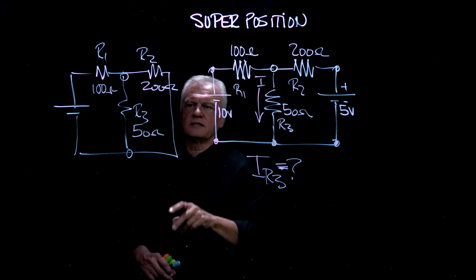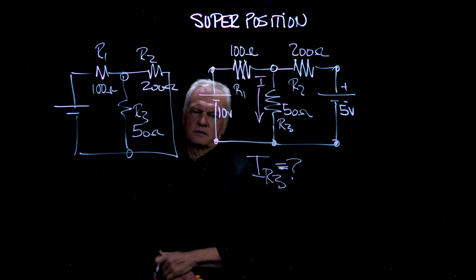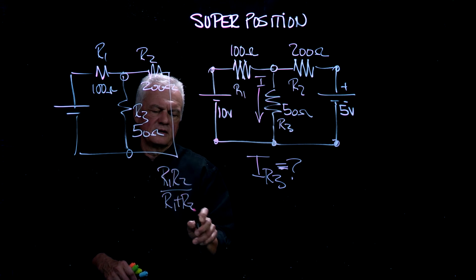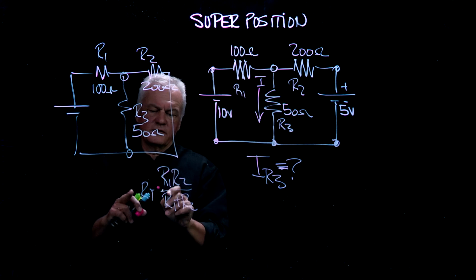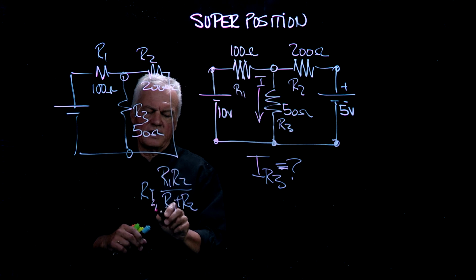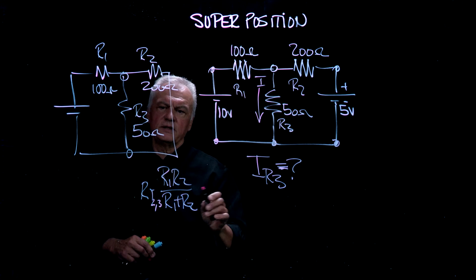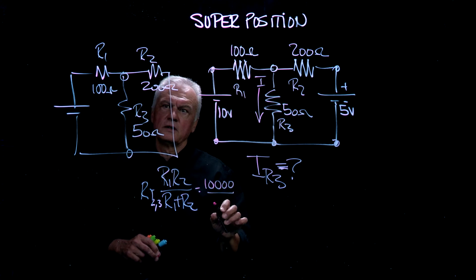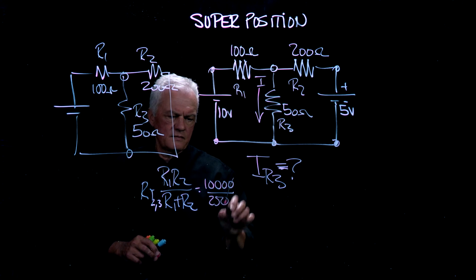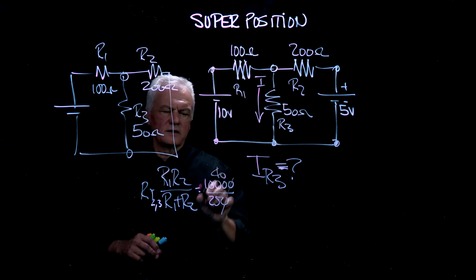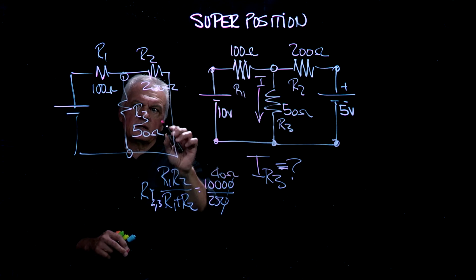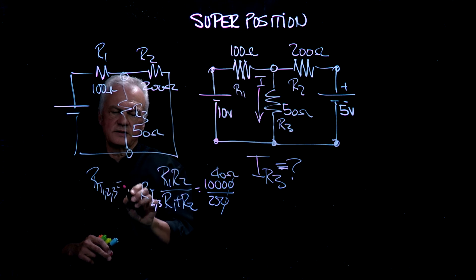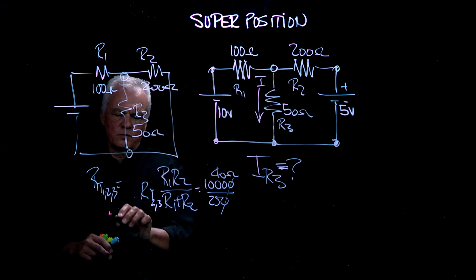The first rule for parallel is that our result has to be less than 50. I'm going to use the R1 times R2 over R1 plus R2 formula to get the total resistance of the two in parallel, which is basically 2 and 3. That's going to be 200 times 50 over 200 plus 50. So 25 into this is 40 ohms. The two in parallel is 40 ohms, and the total resistance of 1, 2, and 3 is equal to 40 plus 100, 140 ohms.